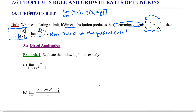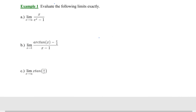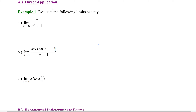Let's try an example. Evaluate the following limits exactly: the limit as x approaches infinity of x divided by e to the x plus 1. Notice in this case our target value is infinity—a symbol representing a number that grows without bounds. As x goes to infinity, the numerator goes to infinity, and e to the x also goes to infinity. So we have an indeterminate form, infinity over infinity. That's the green light for L'Hôpital's rule.